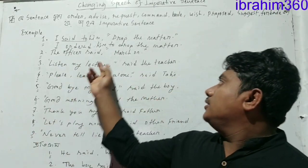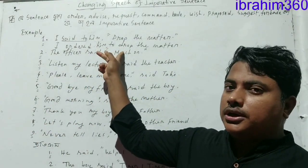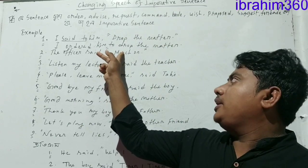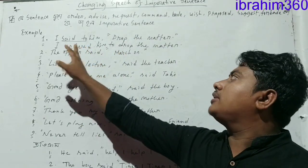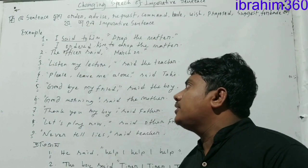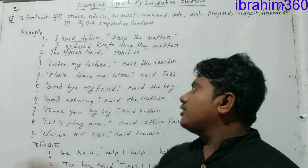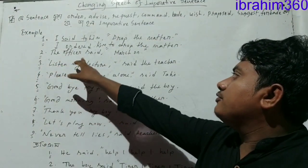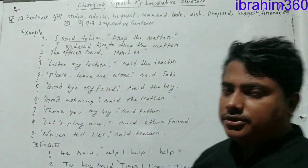Here, we cannot write 'dropped' — that would be wrong. We also cannot write 'said' because the word indicates order. Therefore we write 'ordered'. For the next sentence: the officer said, march on.